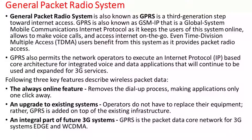Following are the key features of wireless packet data. First, the always-online feature removes the dial-up process, making applications only one click away. Second, it is an upgrade to existing systems — operators do not have to replace equipment; GPRS is added on top of existing infrastructure. Third, it is an integral part of future 3G systems — GPRS is the packet data core network for 3G systems including HSDPA and WCDMA.